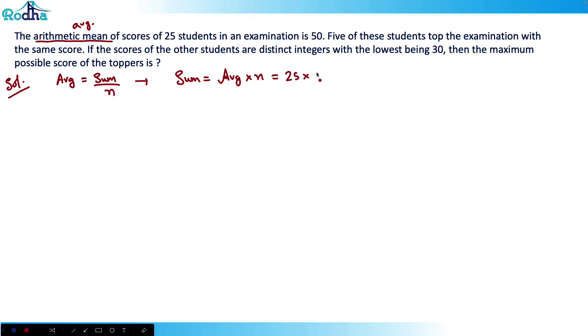And this is 25 into 50, this is equal to 1250. Now five of these students stop the examination with the same score and if the scores of the other students are distinct integers with the lowest being 30.